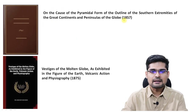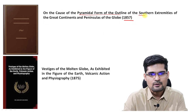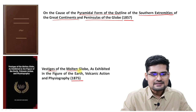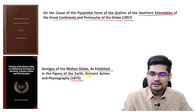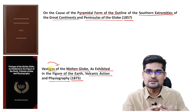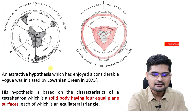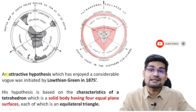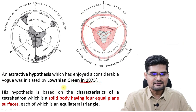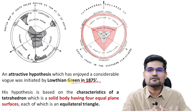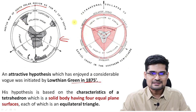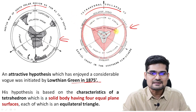In 1857, Lothian Green published 'The Cause of the Pyramidal Form of Outline of Southern Extremities of Great Continents and Peninsulas of the Globe,' and in 1875 he published 'Vestiges of the Molten Globe as Exhibited in the Figure on the Earth' — on volcanic action and physiography — when he worked on volcanoes in the Hawaiian Islands and others. These are two major publications in which he discusses the tetrahedral hypothesis, and the hypothesis was enjoyed to a considerable extent by many geologists and scholars.